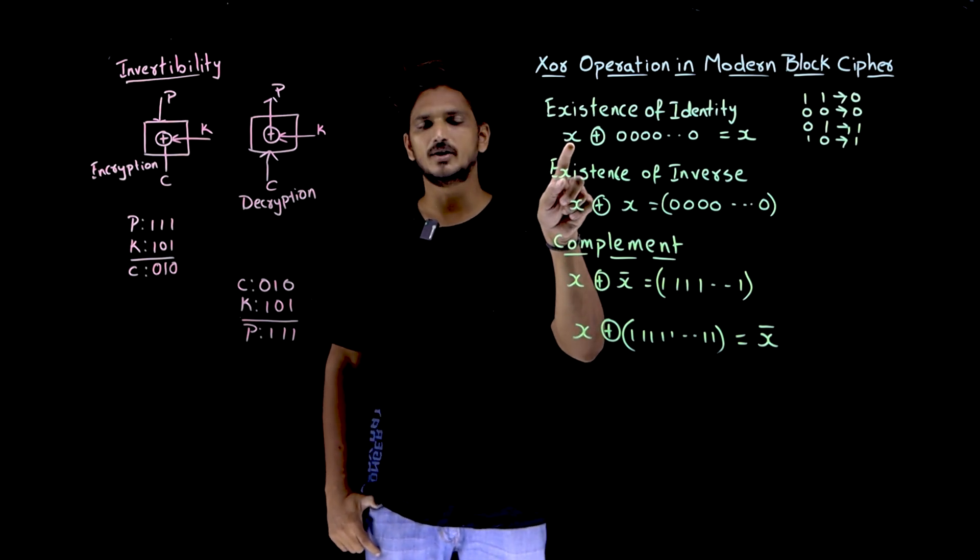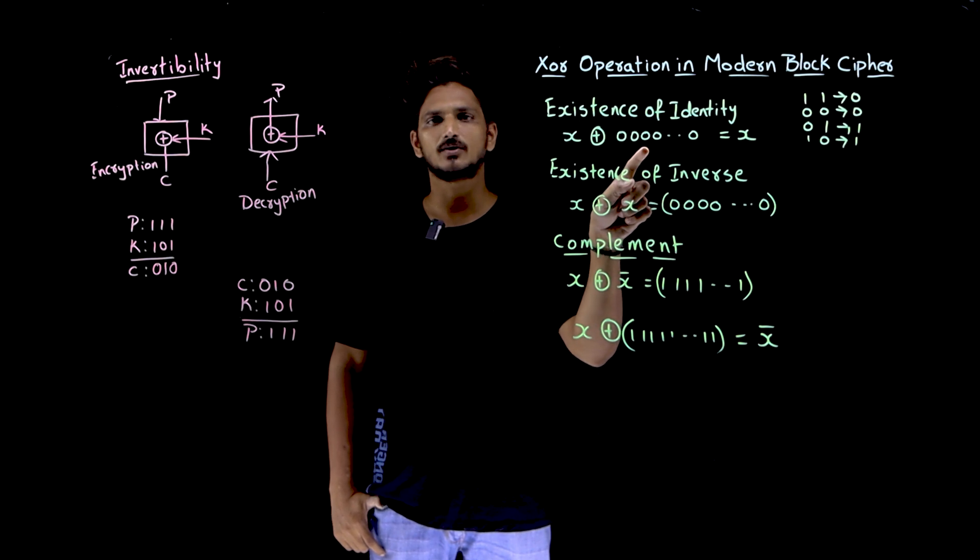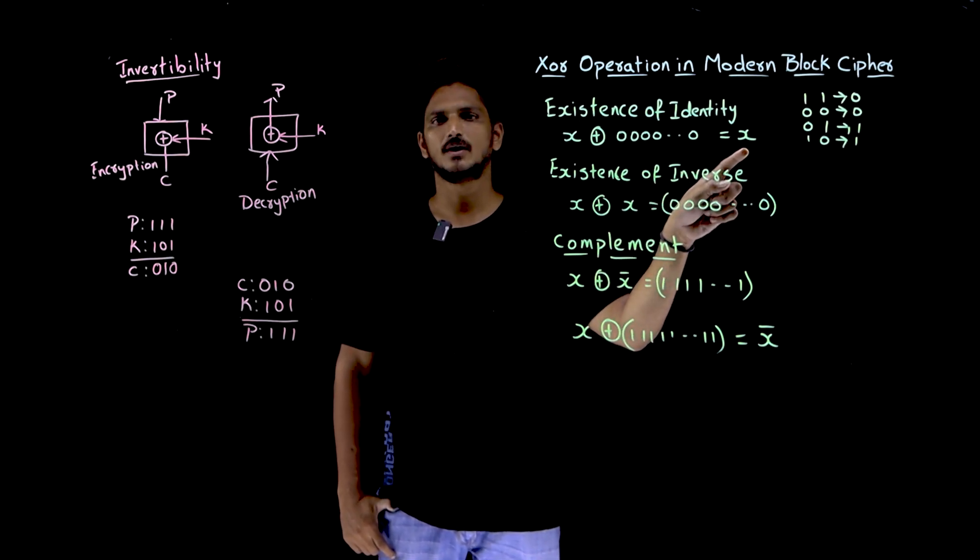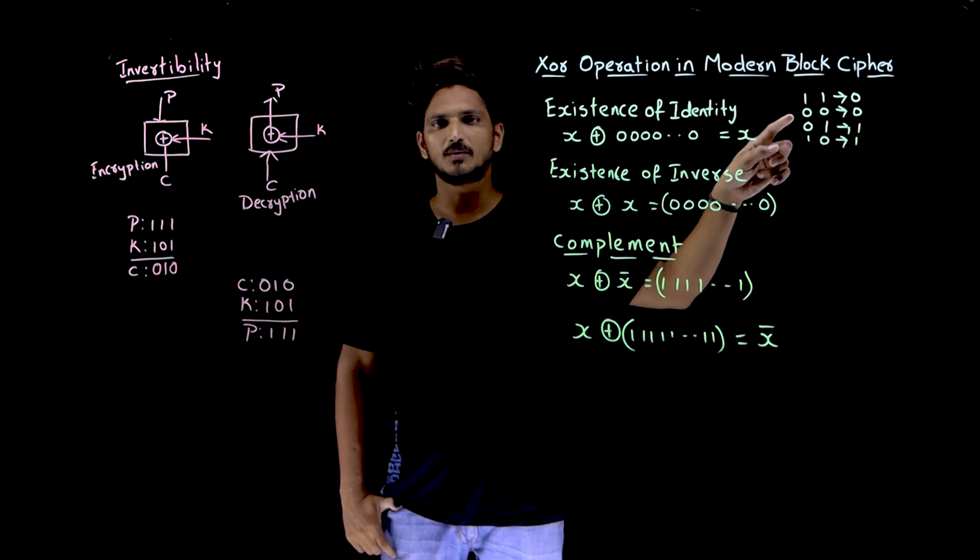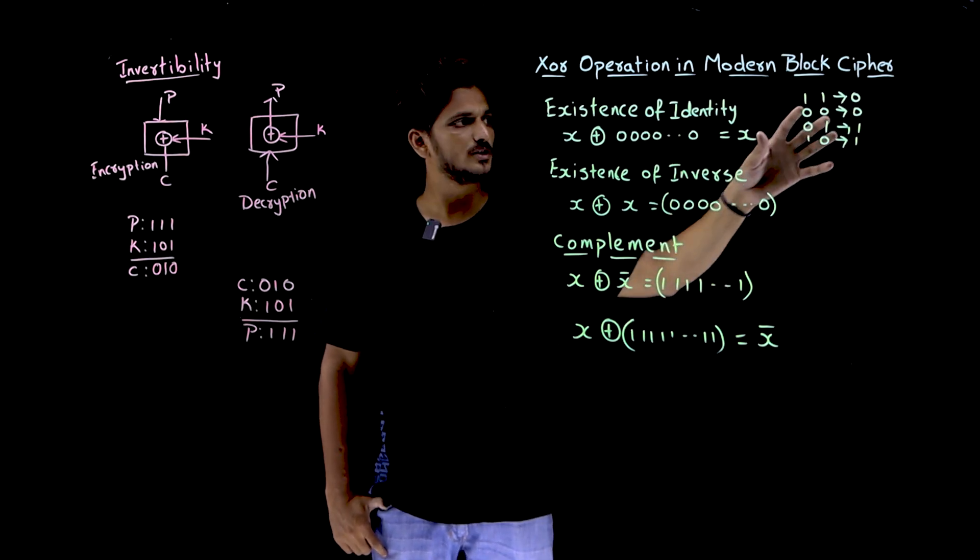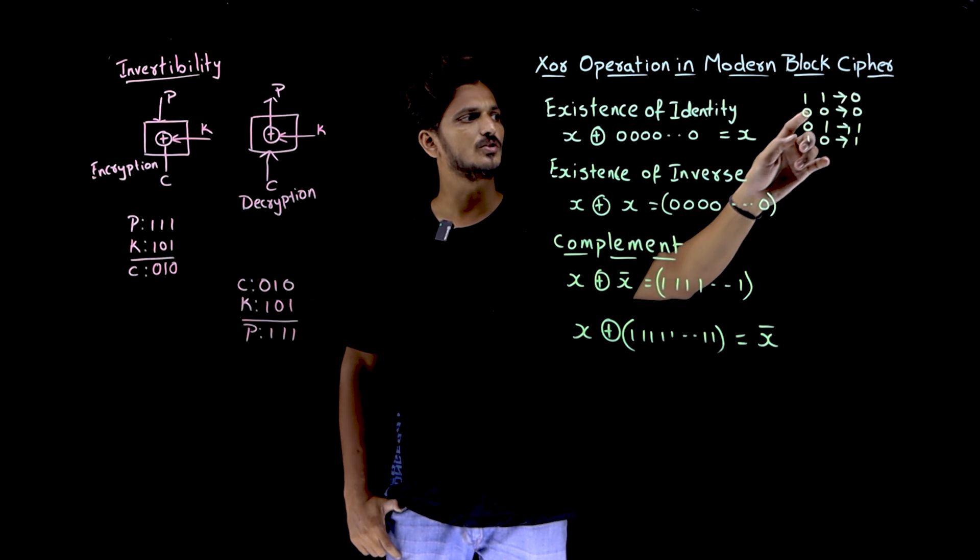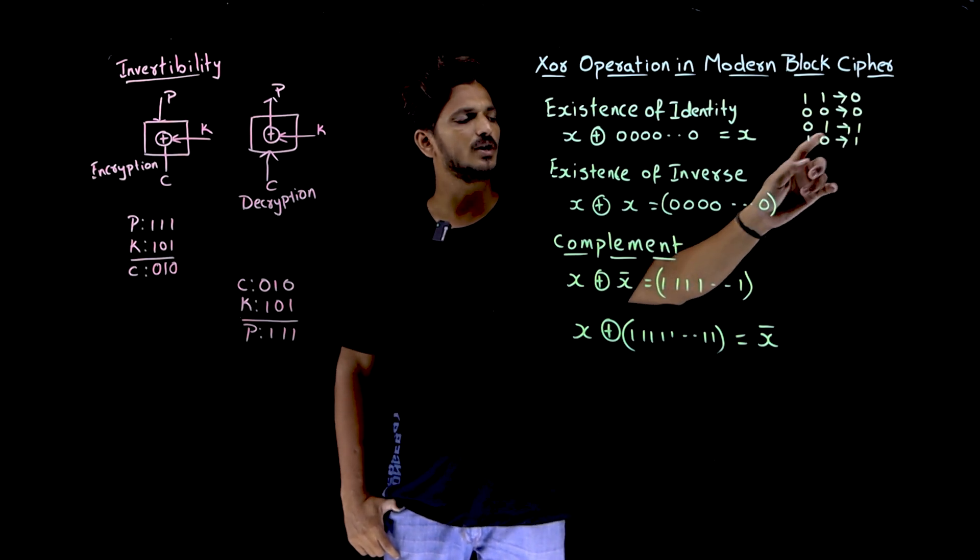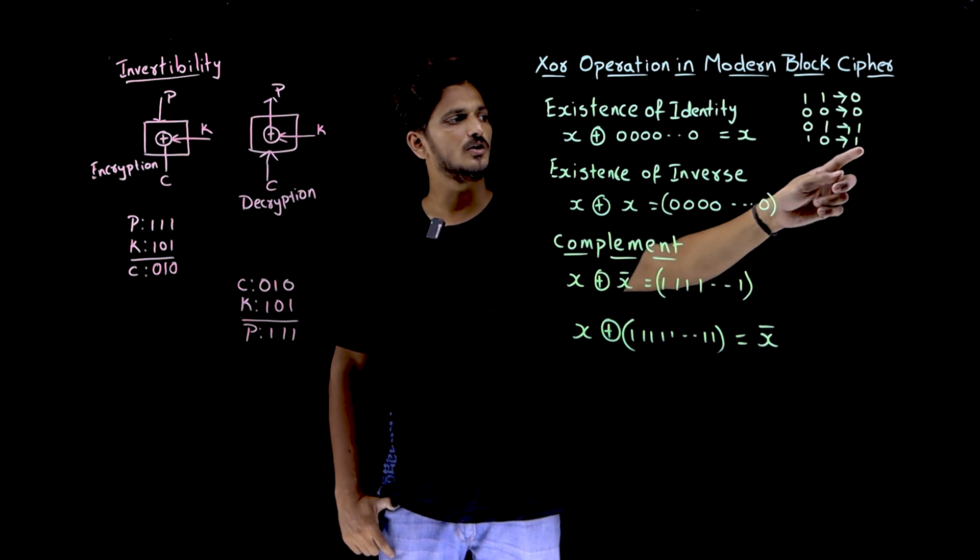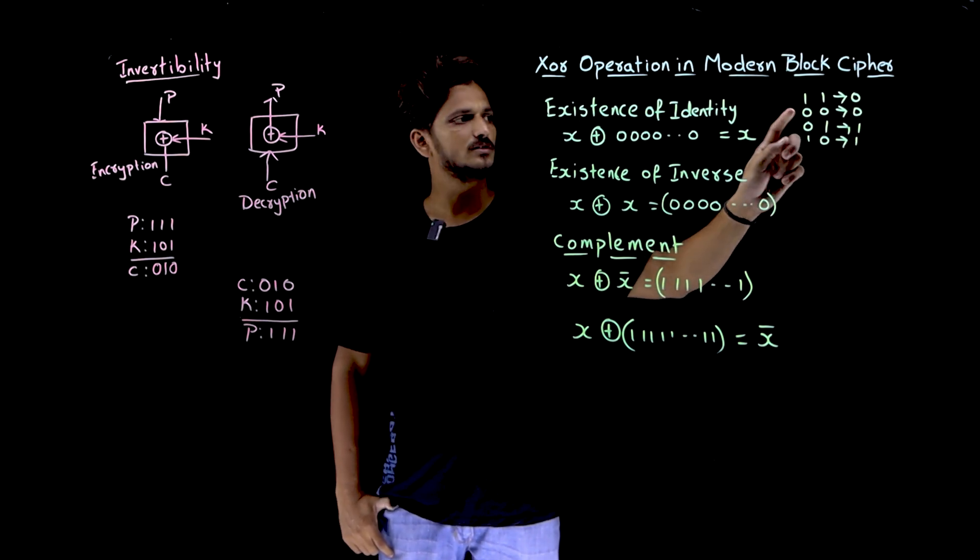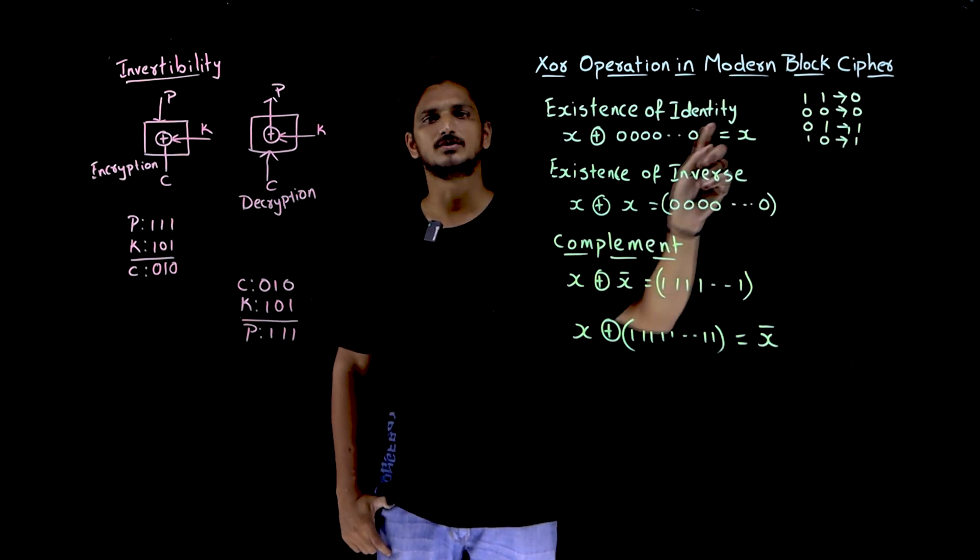Because you take any value here, XOR with zeros, you are going to get X. So what is XOR operation means, see this is the XOR table from our digital logic design. 1 1 means 0, 0 0 means 0, 0 1 means 1, 1 0 means 1. Opposite bits, you are going to get output as 1, same bits you are going to get output as 0.